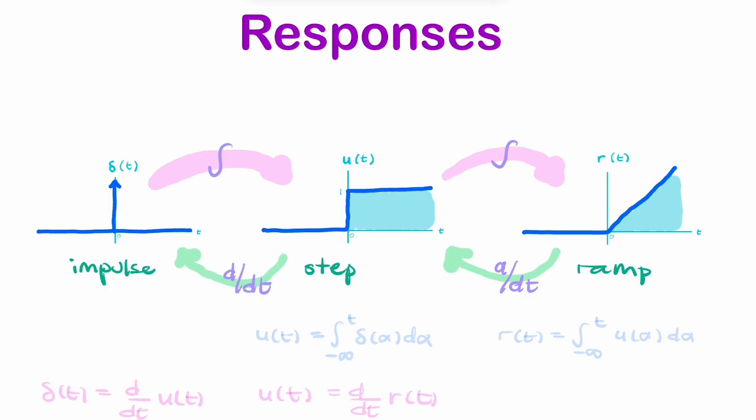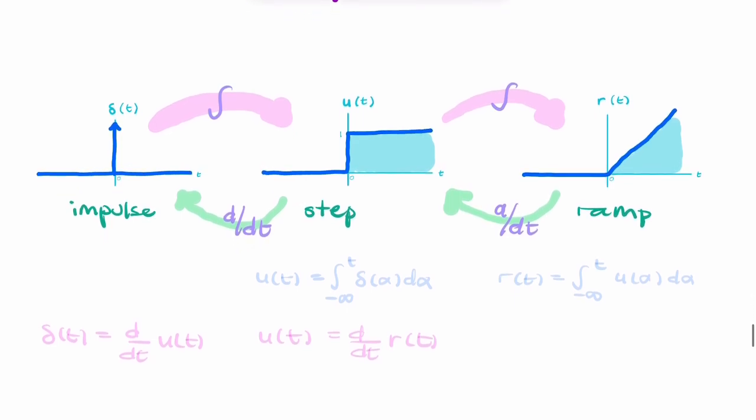And I can spell it out for you and say that the unit step u of t is equal to the integral from minus infinity to t of the impulse function, using some other variable.